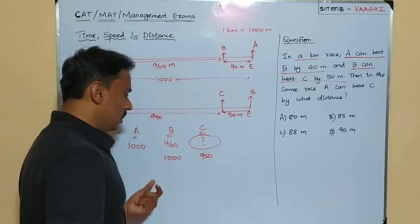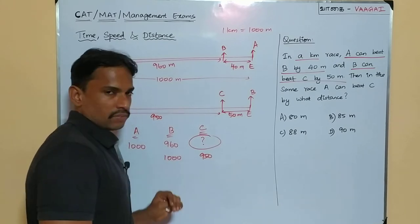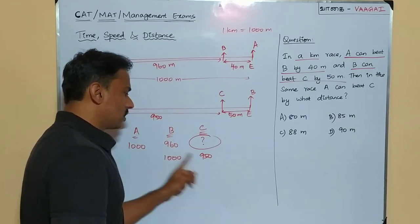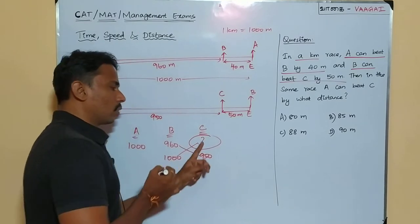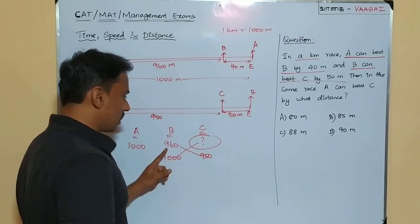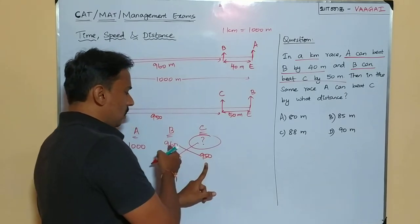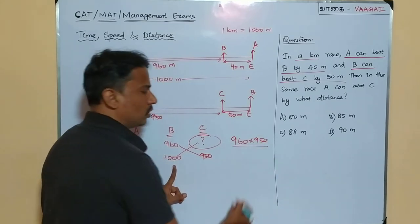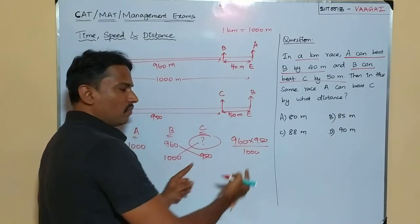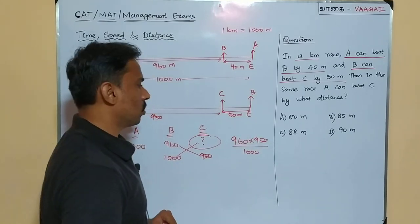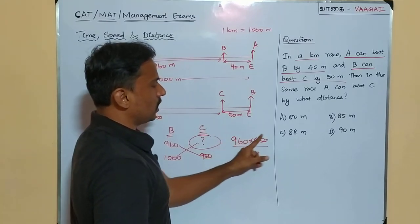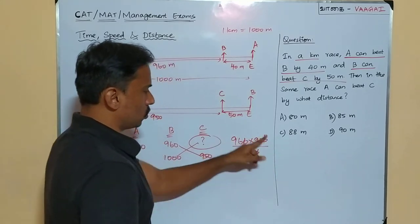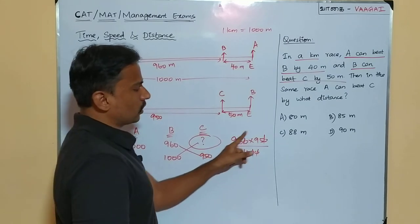This relationship is a direct proportion. When B is at 1000, C is at 950. When B is at 960, what is C? We cross-multiply to find the missing value: C = (960 × 950) / 1000. Let us simplify — cancel two zeros from 960 and 950 against the 1000 in the denominator, giving us 96 × 95 / 10.